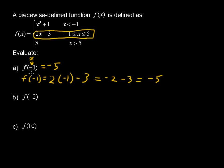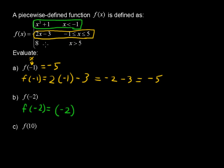We've evaluated that function when x equals negative 1. Now let's look at the next one: when x equals negative 2. We can use the first piece because negative 2 is less than negative 1. So f(−2) equals negative 2 raised to the third power plus 1, which is negative 8 plus 1, and that equals negative 7.